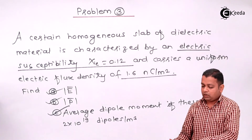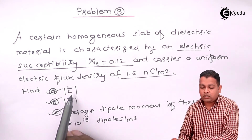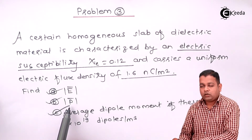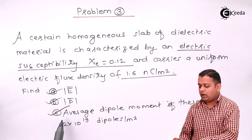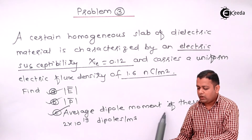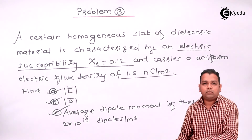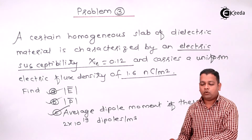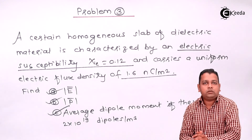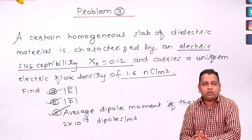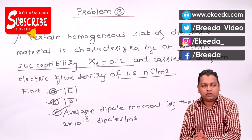This way we have covered the determination of magnitude of electric field intensity, the magnitude of polarization, and the magnitude of average dipole moment for the given details of the dielectric material. I hope you have understood well. For more information on electromagnetic field theory, you can subscribe to the Ekida channel. Thank you.